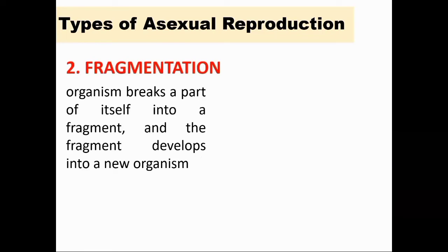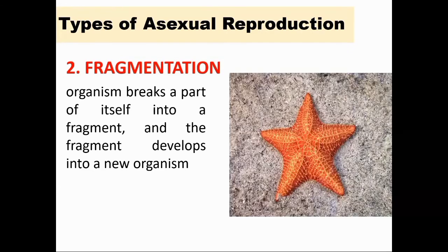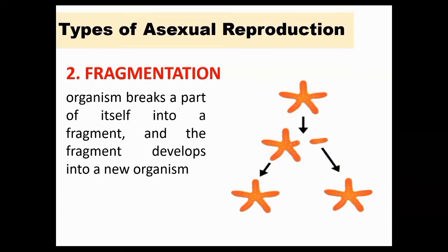Another type of asexual reproduction is fragmentation. Fragmentation occurs when an organism breaks a part of itself into a fragment, and the fragment develops into a new organism. Think of a starfish — a starfish can have one of its legs cut off and it will grow back. What's more remarkable is that the leg that was cut off will grow into a new starfish. These organisms are capable of regeneration, and the fragment starts to grow the missing parts of its limbs.